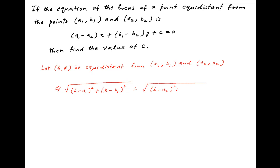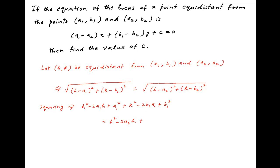Squaring both sides, we get h squared minus 2a1·h plus a1 squared plus k squared minus 2b1·k plus b1 squared is equal to h squared minus 2a2·h plus a2 squared plus k squared minus 2b2·k plus b2 squared. The h squared and k squared cancel across both sides.